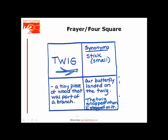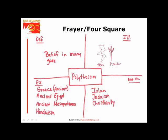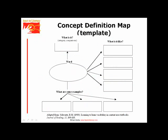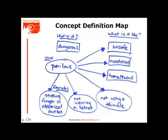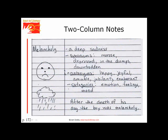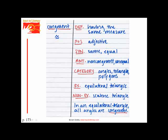This is an example of the frayer, or foursquare, from an early elementary grade — this is a social studies word. This is the blank concept definition map template, followed by a concept definition map for the word 'perilous.' This example shows the use of two-column notes, where the vocabulary word goes in the left column and information about the word goes in the right. Here is another example from a math unit.